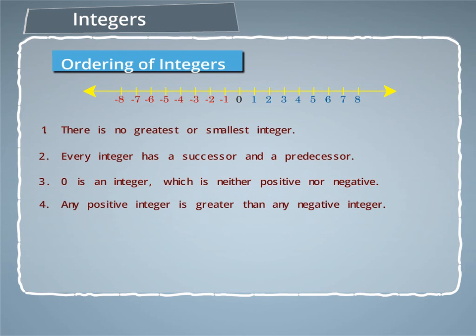4. Any positive integer is greater than any negative integer. For example, 2 is greater than minus 1.